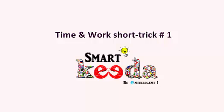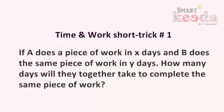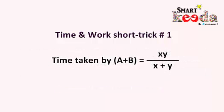In this type of time and work problem, the language of the question goes like: if A does a piece of work in X days and B does the same piece of work in Y days, how many days will they together take to complete the same piece of work? To find the time, we can apply the short trick: time taken by A and B together is equal to X multiplied by Y upon X plus Y.